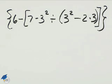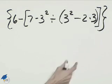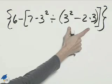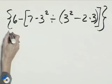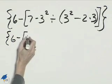We need to evaluate this expression, and we'll follow the order of operations to do so. Working inside the parentheses here, working on the exponents, we bring down the 6 minus the bracket.